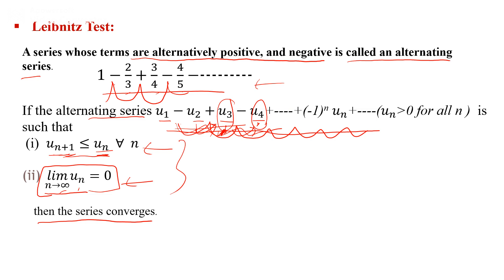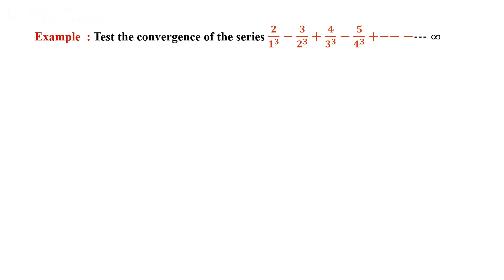When we use the nth term or the (n+1)th term in Leibniz's test, we ignore the sign. Now take an example: test the convergency of the series 2/1³ minus 3/2³ plus 4/3³ and so on.